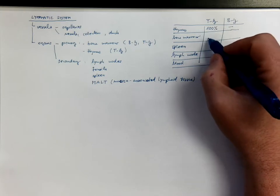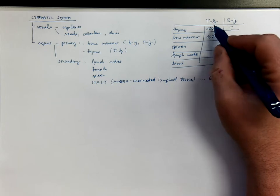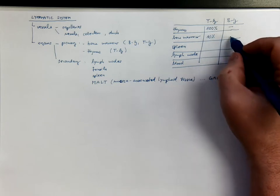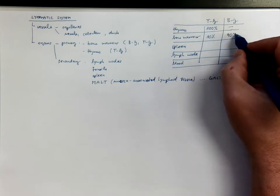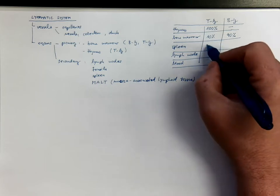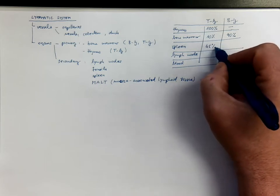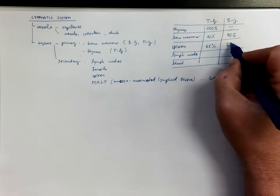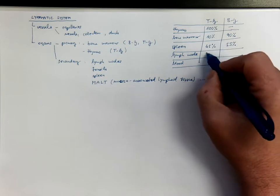In bone marrow, 10% of lymphocytes you will find will be T lymphocytes and the majority will be B lymphocytes. In spleen, the ratio is much more even, so is in the lymph nodes.